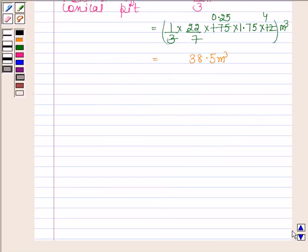We have to find its capacity in kiloliters, so let us now convert this into kiloliters. We should know that 1 meter cube is equal to 1 kiloliter. So this implies 38.5 meter cube is equal to 38.5 kiloliters.